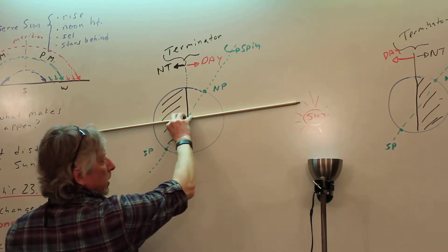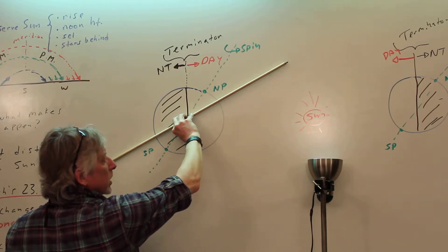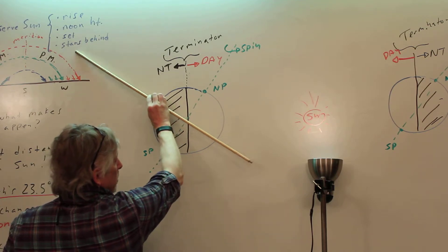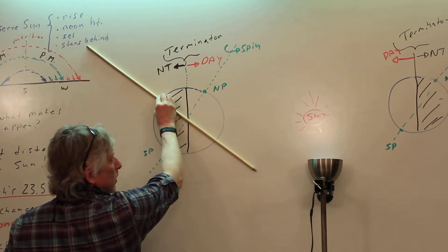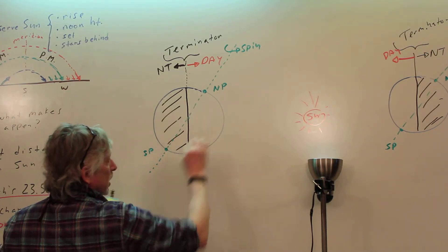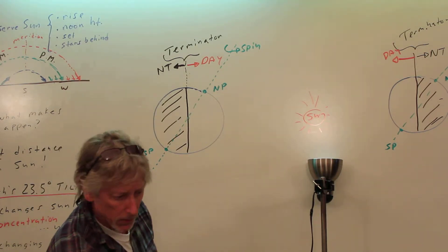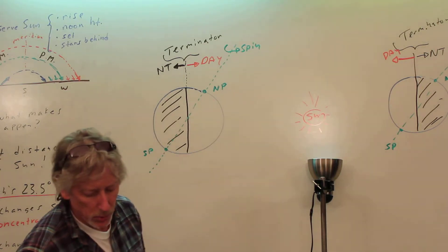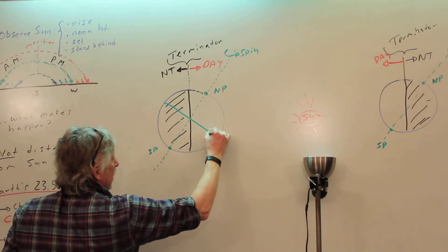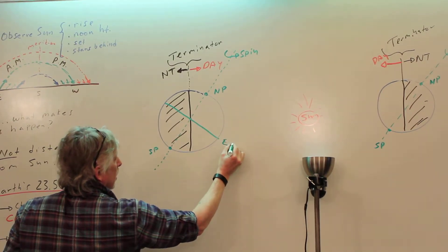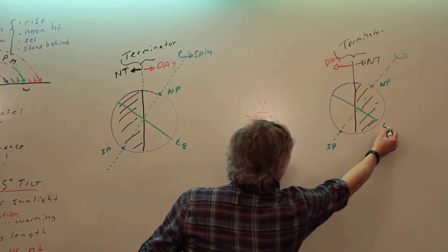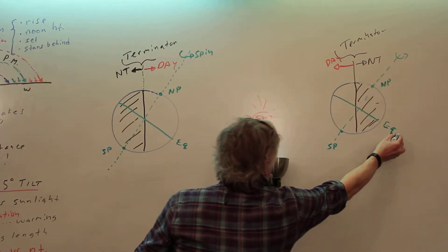So that's not the equator — don't get confused by the Terminator. If North and South Pole are there, the equator is going to go across, perpendicular. If you want, use your fingers like this — that's going to be the line for the equator. On both Earths, draw the equator. It doesn't have to be perfect.